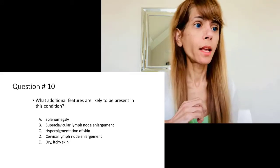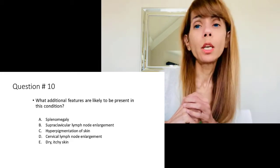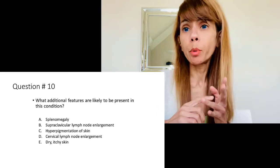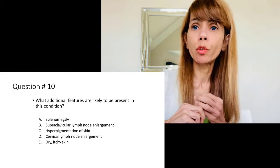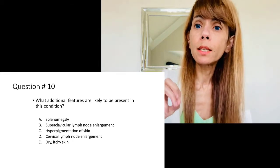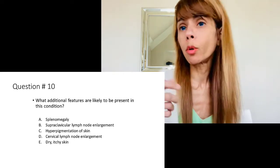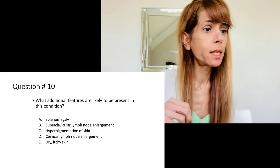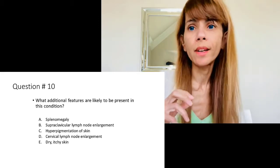Question number ten asks what additional features are likely present to confirm a diagnosis of Kawasaki syndrome. The choices include splenomegaly, supraclavicular lymph node enlargement, hyperpigmentation of the skin, cervical lymph node enlargement, or dry itchy skin. The correct answer is cervical lymph node enlargement — a feature of Kawasaki syndrome not mentioned in the case stem. Splenomegaly occurs in mono, supraclavicular lymphadenopathy relates to GI malignancies, and hyperpigmentation and dry itchy skin are not part of Kawasaki syndrome.